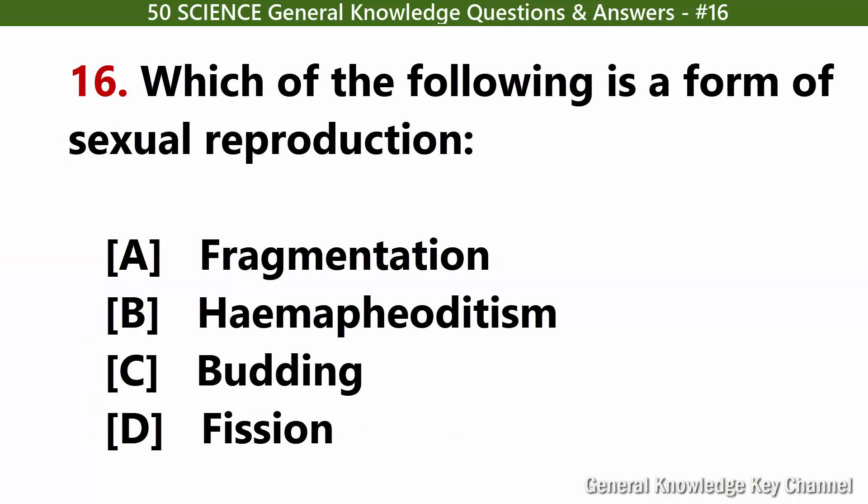Which of the following is a form of sexual reproduction? Answer B: Hermaphroditism.